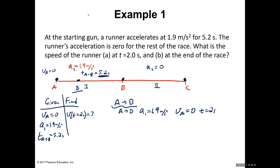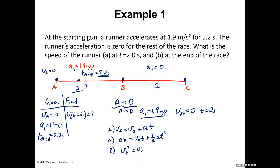For one-dimensional kinematics with constant acceleration, we have four equations: Equation 1: v_final = v_initial + a·t. Equation 2: Δx = v_initial·t + ½a·t². Equation 3: v_final² = v_initial² + 2·a·Δx. Equation 4: Δx = (v_initial + v_final)/2 · t. These require constant acceleration, which we can assume here.